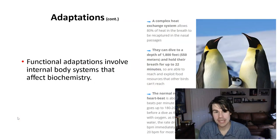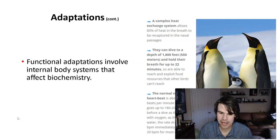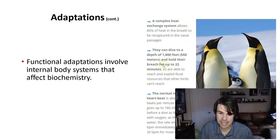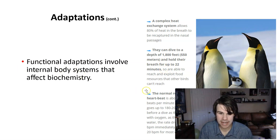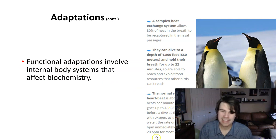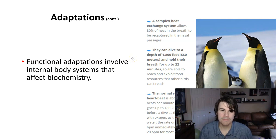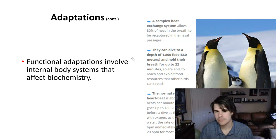Not only that, there are functional adaptations. Emperor penguins — some of you are probably thinking Happy Feet right now. These are functional adaptations: 80% of the heat in their breath is recaptured, they can dive up to 1,800 feet and hold their breath for 22 minutes. Their heart rate can go up to about 180 to 200 beats per minute, then drop down to 20 beats per minute. Those are all functional adaptations affecting body systems and chemistry.